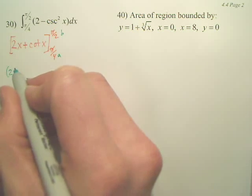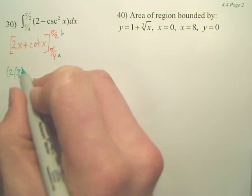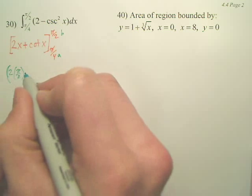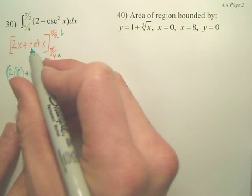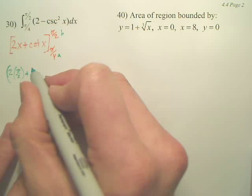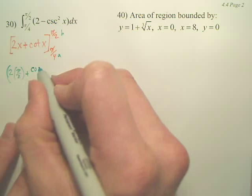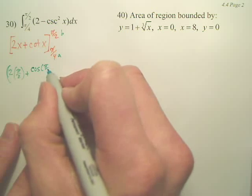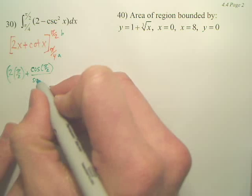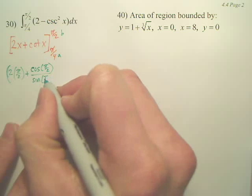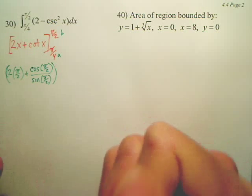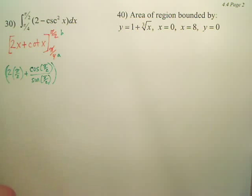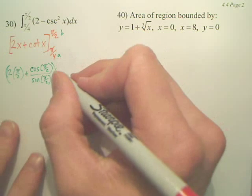So we're going to take 2 times pi over 2, plus — can I change cotangent to make it easier? Isn't cotangent cosine(pi/2) over sine(pi/2)? That is F of b — big F, the antiderivative of f.